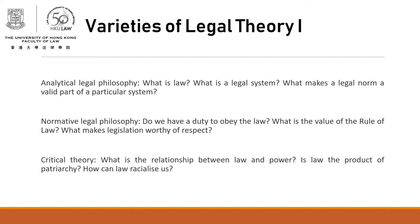The final group on this slide is critical theory. Unlike the first two groups, which are grounded mainly in Western analytical philosophy, critical theory draws more from continental traditions and literary criticism. These tend to be left-leaning theories, although not always. They look at law in its context and ask questions like: what is the relationship between law and power, is law a product of patriarchy, and can the law racialize us? Critical theory is a very broad church and includes feminist legal theory, critical race theory, queer theory, and so on.